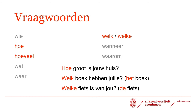Another important interrogative pronoun is 'which' — in Dutch, welk or welke. As you can see, there are two forms. The use depends on the gender of the following noun. Welk is used for neuter singular nouns — het-woorden. Welke is used in all other cases — de-woorden. For example: Welk boek hebben jullie? — het boek. Welke fiets is van jou? — de fiets. Meaning: which book do you have? Which bicycle is yours?